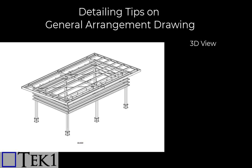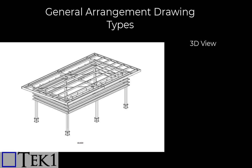A GA drawing explains the location of all the members in a structure. It represents the erection sequence of a building. A GA drawing must contain a 3D view as the first sheet, as the erector must know what he is constructing.